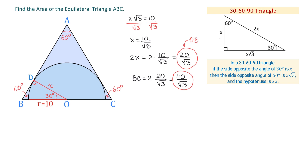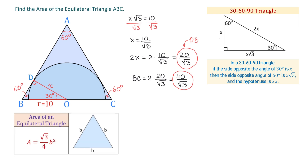Now, to find the area of this triangle, one approach would be to find the height of the triangle and then use the formula: area equals one half times base times height. Another approach would be using the formula for the area of an equilateral triangle given the side B. This formula is A equals square root of 3 over 4 times B squared. We will replace B with 40 over square root of 3.